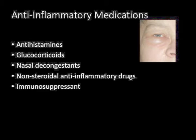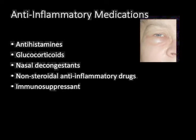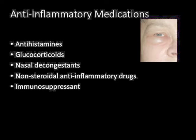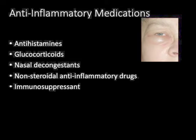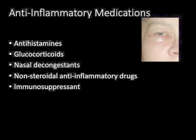NSAIDs — non-steroidal anti-inflammatory drugs — can be antipyretic, meaning they reduce fever, or analgesic, meaning they reduce pain, and anti-inflammatory. Examples of OTC NSAIDs include ibuprofen, which is Advil and Motrin, and naproxen, which is Aleve. A prescription oral medication is celecoxib, or Celebrex. There's also an IV NSAID, and that's ketorolac, or Toradol.